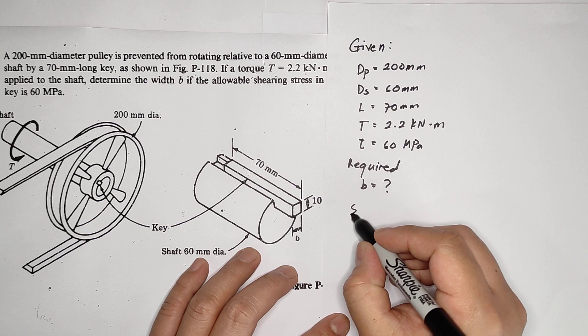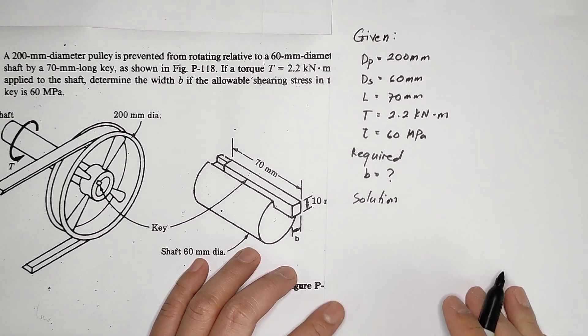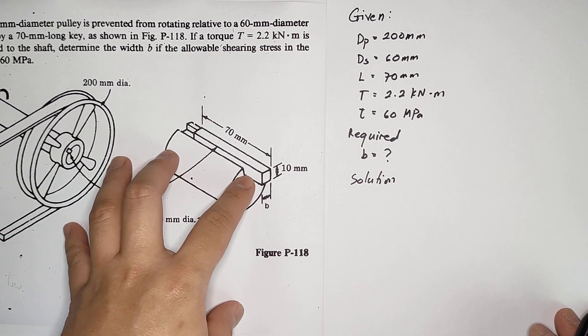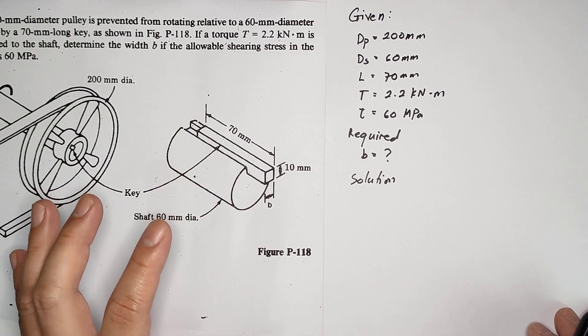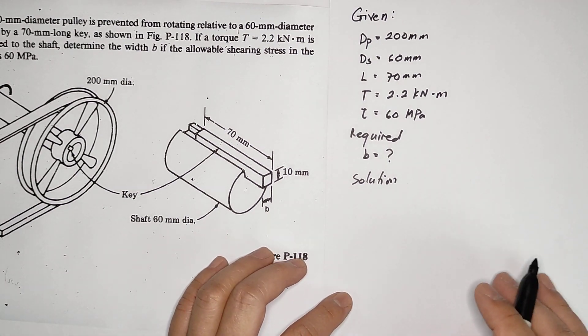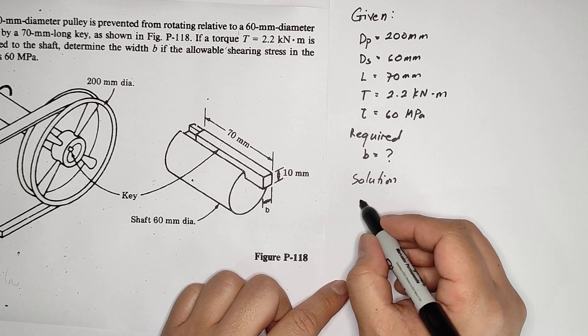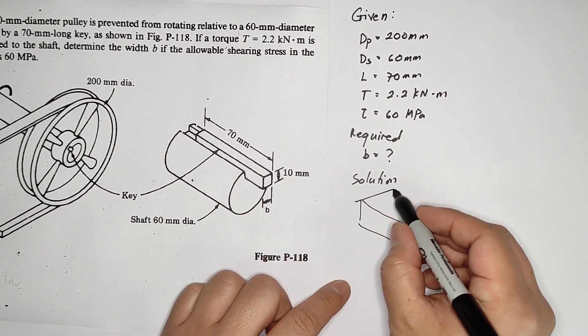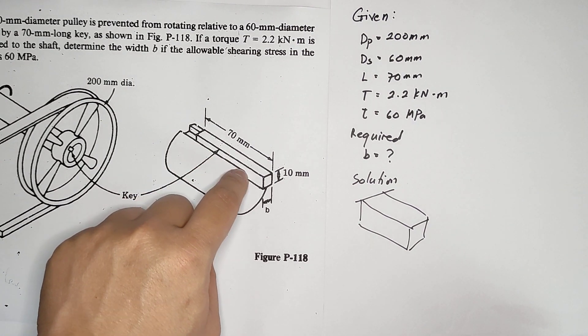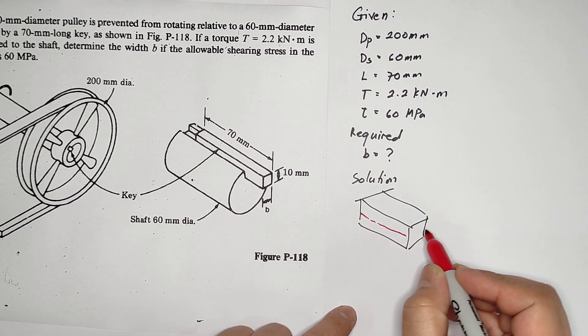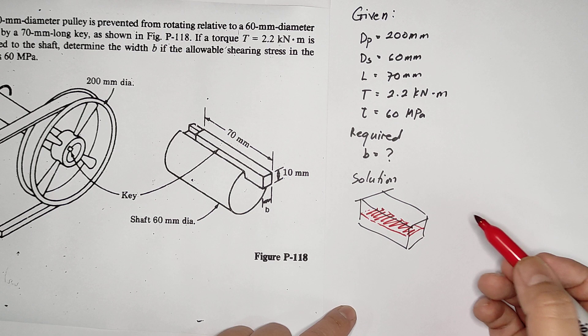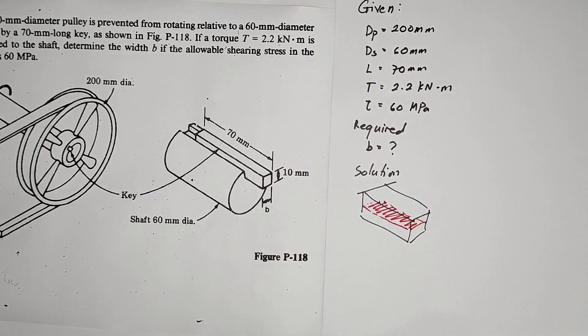Now the solution. How to solve for the width B, given you have a shearing stress? The failure of this key is shearing. We are not yet discussing about bearing stress or any other stresses, but shearing stress. For example, this is the key, I will draw the key. The key at this part will experience a shear, napupunit yan, masisira.